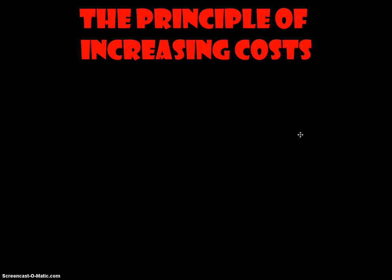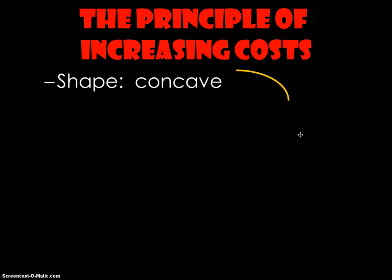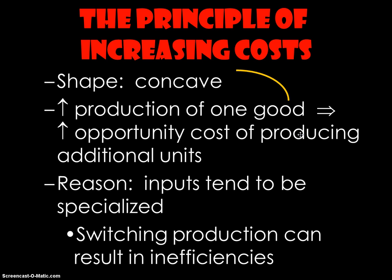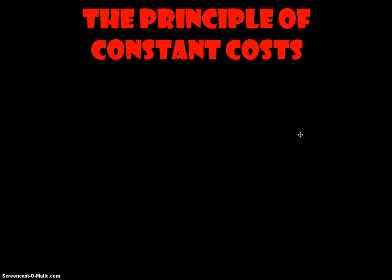This particular production possibilities curve was bowed outward because of the principle of increasing costs. This isn't always the case, but in this example the farmer was experiencing increasing costs. The shape of that curve is concave because as we increase production of a good, we experience increasing opportunity costs of producing additional units — there's not a constant tradeoff. This is because inputs tend to be specialized and switching production can result in inefficiencies — some of the farmer's land was better suited to grow wheat and some to grow soybeans.